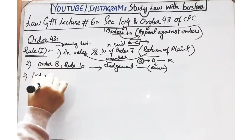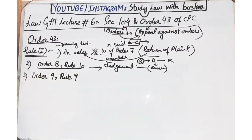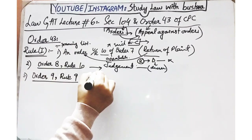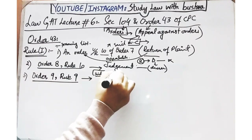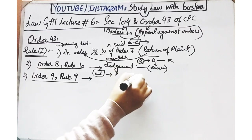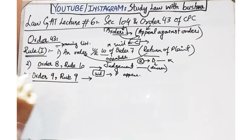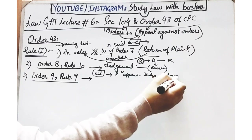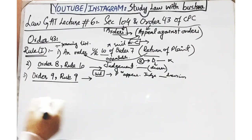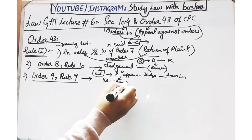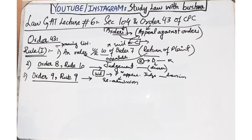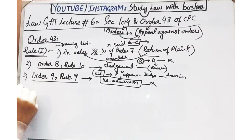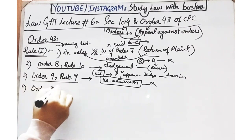Teesra aata hai: an order under Rule 9 of Order 9 - rejecting an application for an order to set aside the dismissal of suit. Order 9 Rule 9 mein kaha gaya hai ke agar koi plaintiff court ke andar appear nahi hota, judge us plaintiff ki gairmojoodgi mein koi decision suna deta hai, phir plaintiff re-admission of the suit ke liye apply karta hai, court ko reasonable ground deta hai, aur agar court is re-admission ko accept karne se inkaar kar deti hai, to court ke is refusal ke order ke against aap appeal file kar sakte ho.